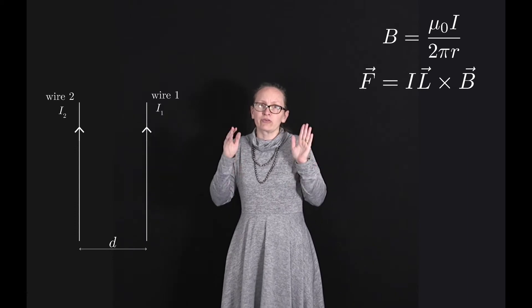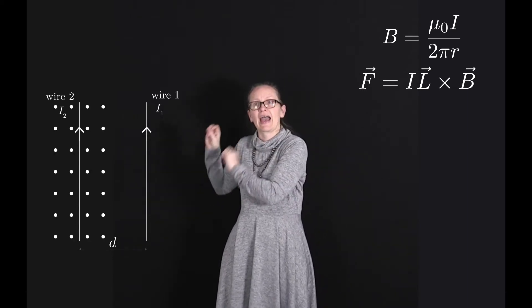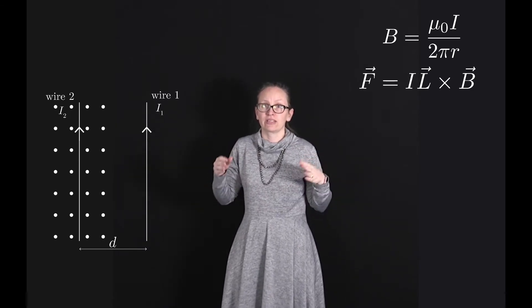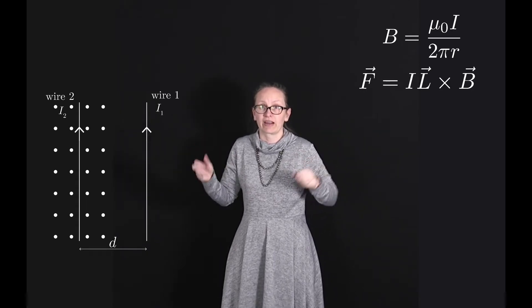Now the current flowing through wire 1 is going to create a magnetic field at wire 2, and we can calculate the magnitude of this field using our expression for the magnetic field around a current carrying wire.